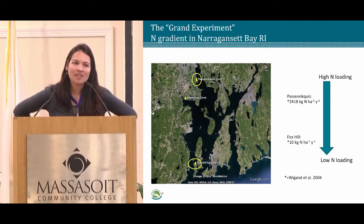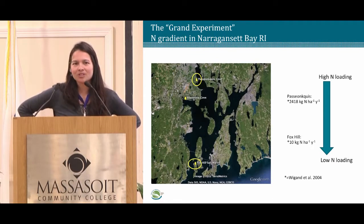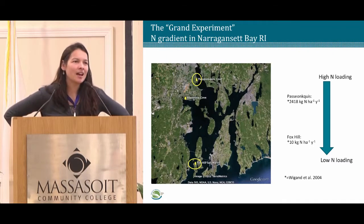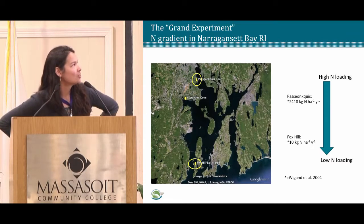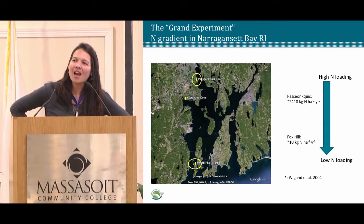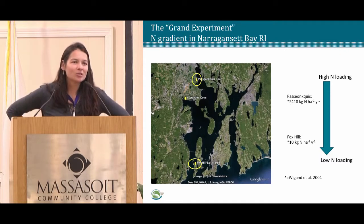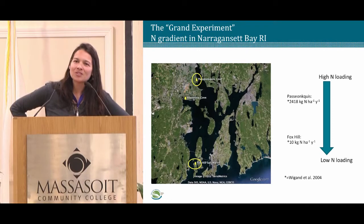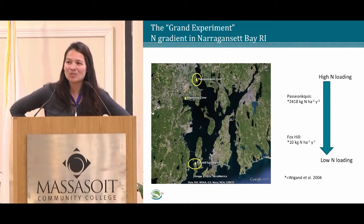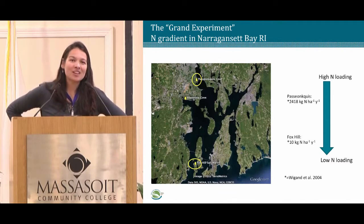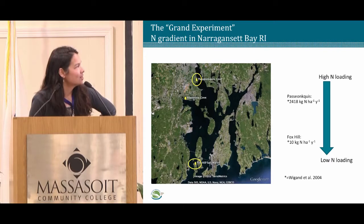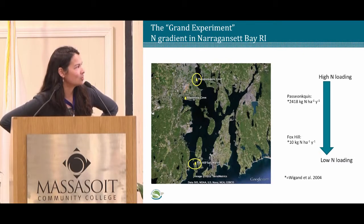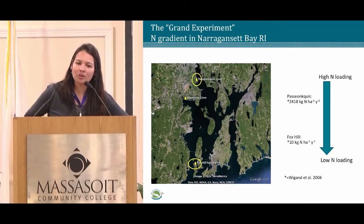That was a small-scale experiment, and I wanted to compare how results differ in a real-world situation with very long-term nitrogen loads in realistic, less-pristine marshes. Moving to a new position in Rhode Island, we have what's called the grand experiment in progress. Rhode Island has a bay-wide nitrogen gradient larger than Waquoit Bay, and for more than 200 years that gradient has existed. Only recently, due to sewage treatment plant upgrades, is nitrogen being decreased significantly.